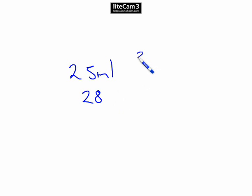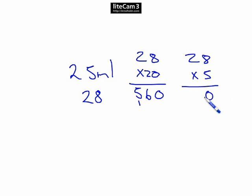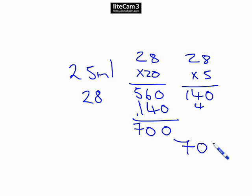So we'll put our 28 times it first by the 20. So 10's in 8, 2, 16. 2, 2, 4, 1, 5. Now we do our 28 and we'll times it by the 5. So 8, 5's are 40. 5, 2, 2, 10, 14. Now we just need to add these together. So 5, 60 plus the 1, 40. 0, 0, 1, 5, 6, 7. So 700 milliliters is our answer.